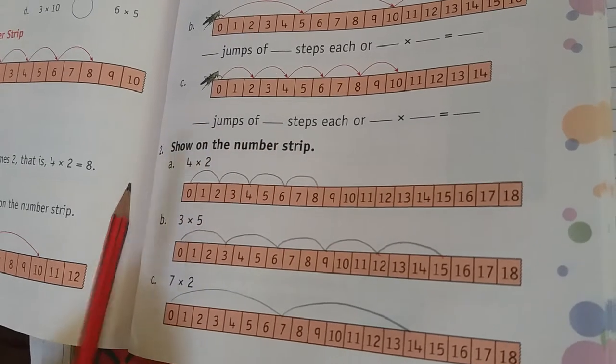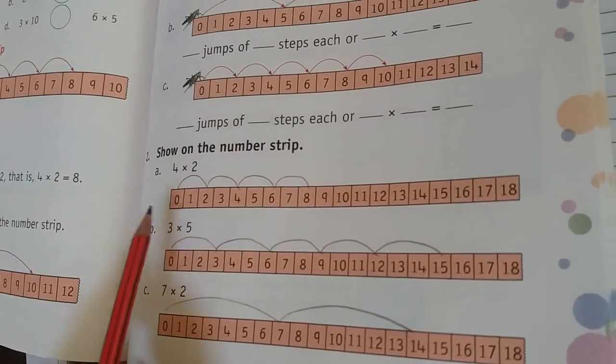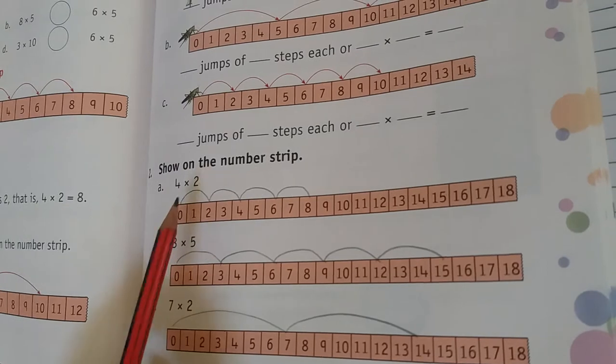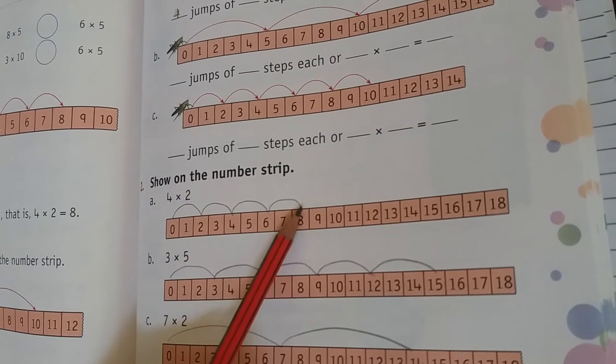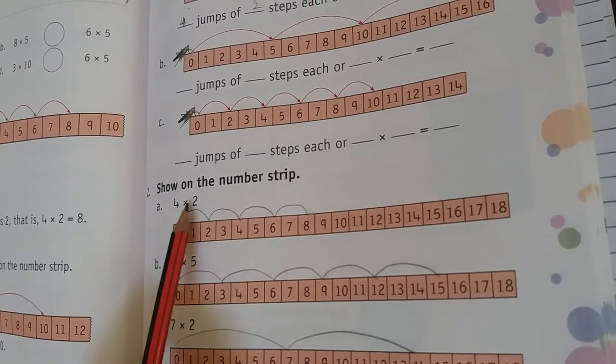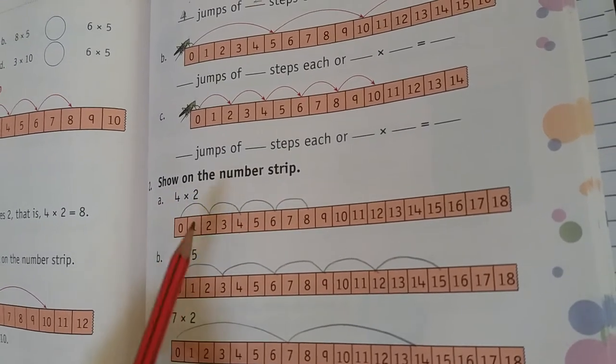Show on the number strips, 4 into 2. The number strips are made by, so 1, 2, 3, 4, 8. 4 into 2 is 8. Next.